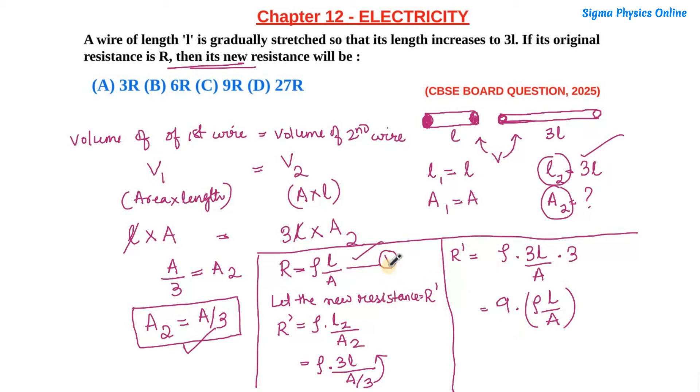So the new resistance R' will be 9 times R, or 9 times the original resistance. Therefore, R' = 9R, which means option C is the correct answer. I hope you've understood the solution to this question.